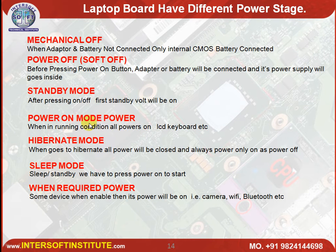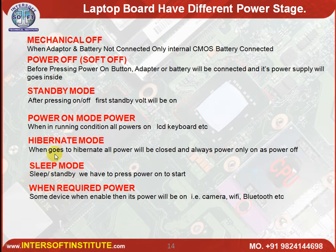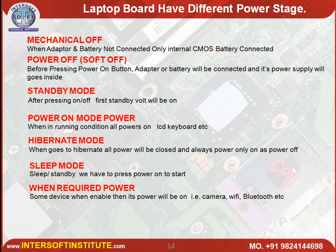Power on means all devices will be getting power — the LCD, keyboard, and all those are running on power. One more stage in the laptop is hibernate mode. Hibernate means it acts like a shutdown, but before going to shutdown the laptop stores all the data currently in use into the hard disk.